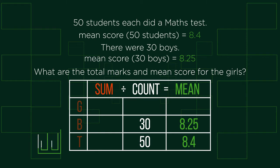The best way for us to tackle this problem is to use the same table from the first question. This time, however, we won't be filling in the sum column, but we can fill the mean column, like so. At this stage we have no sum values or information for the girls, but we can work this out given the information in the table.